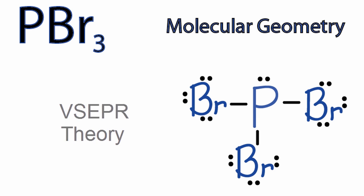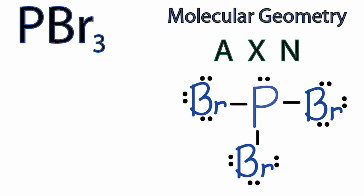And that'll give this molecule its shape. We can use the AXN notation to help us accurately predict what that shape is going to be and to give us an idea about the bond angles. So A, that's the central atom, that's the phosphorus there in the middle.